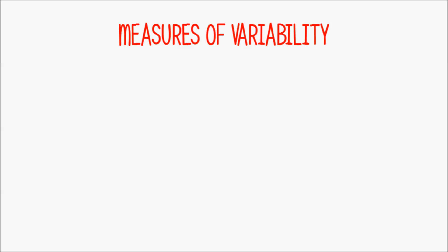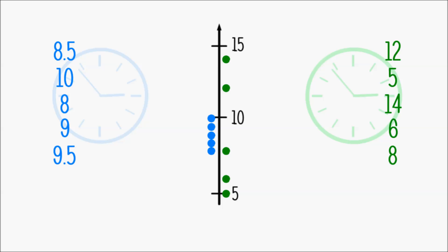The probably simplest measure would be to calculate the distance between the largest and the smallest data value, because that obviously indicates whether all values are located close to each other, or spread out across a wide range. In the case of Patrick, this distance is 10 minus 8, i.e. 2,